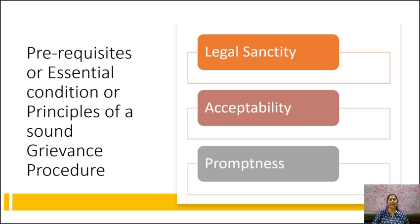Second is acceptability. The grievance procedure must be acceptable to all and should therefore be developed with mutual consultation among management, workers, and the trade union. In order to be generally acceptable, the procedure must ensure a sense of fair play and justice to the workers, reasonable exercise of authority to the managers, and reasonable participation to the trade union.